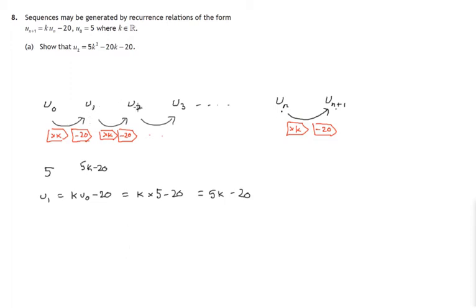Let's move on to u_2. How do we get u_2 from the previous term? We multiply u_1 by k and subtract 20. We know u_1 is 5k minus 20. So let's multiply out these brackets. We'll get 5k squared minus 20k minus 20. So we've shown that u_2 is 5k squared minus 20k minus 20.